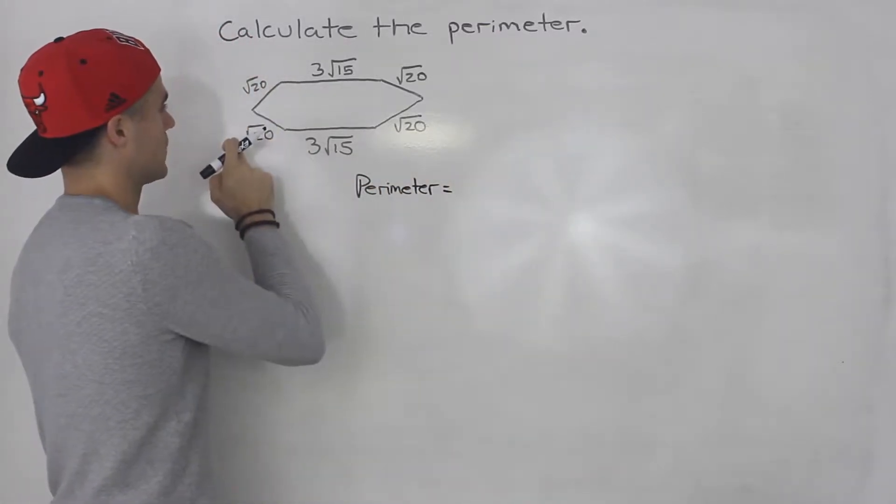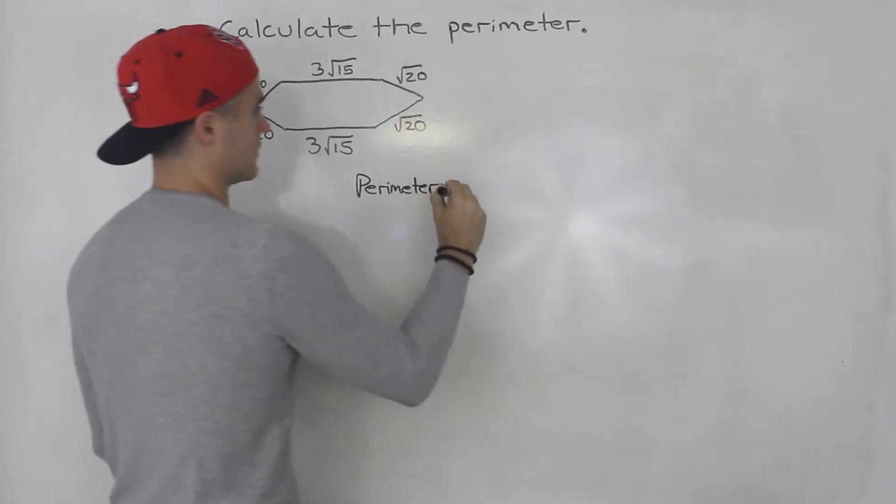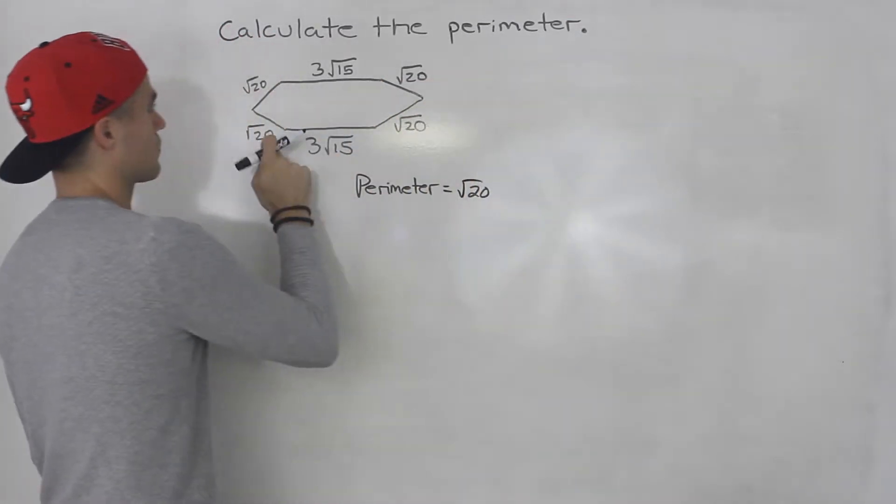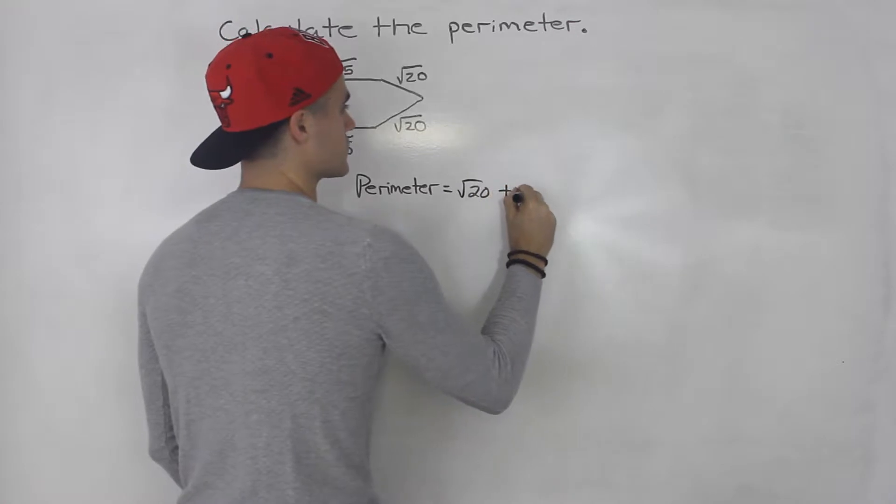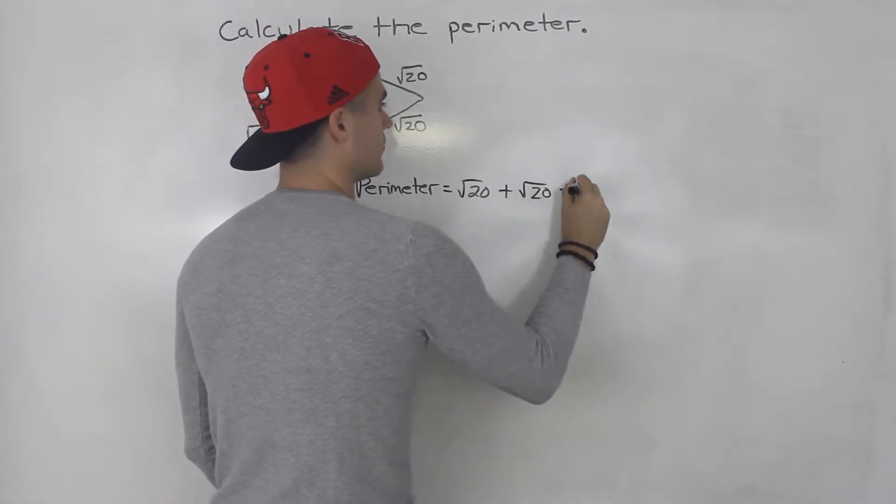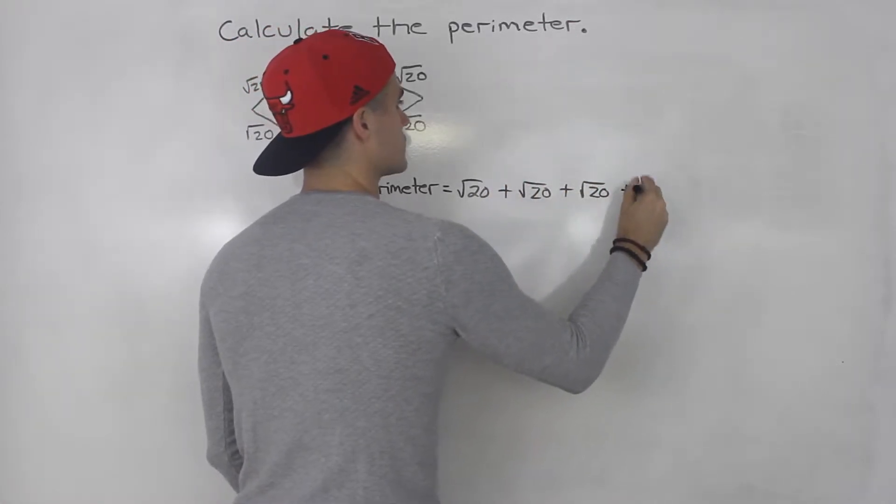So we'll have root 20 added four times, right? One, two, three, four. So root 20 plus root 20 plus root 20 plus root 20.